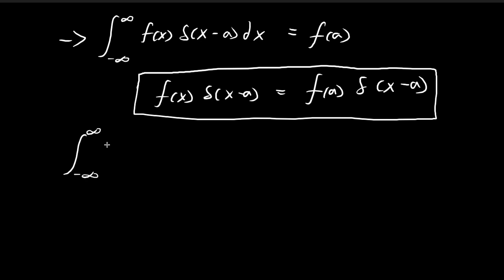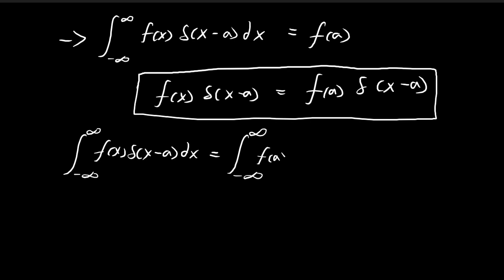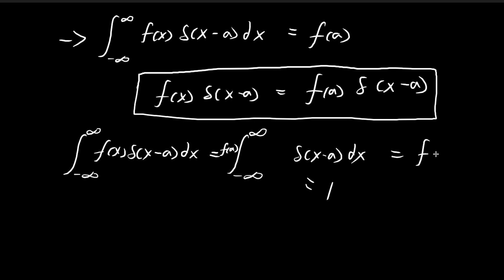Starting with the left-hand side, we have f(x) times the Dirac delta function δ(x - a) dx. We apply the identity and switch out f(x), replacing it with f(a). Since f(a) is just a constant, we can pull it outside the integral. Then, integrating the Dirac delta function by definition gives 1, so the result is simply f(a).